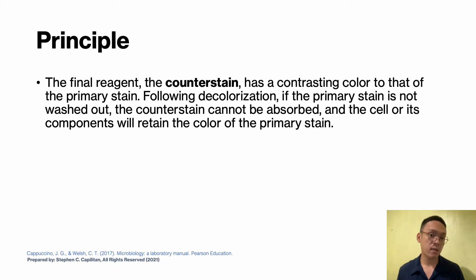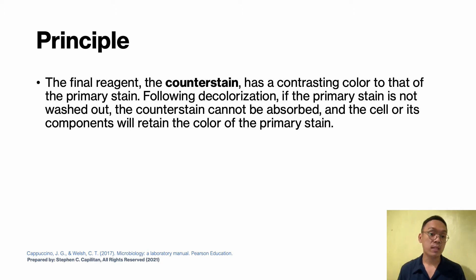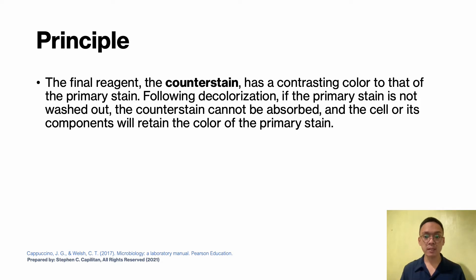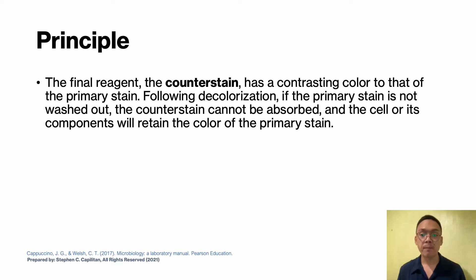To establish color contrast, the third reagent used is a decolorizing agent. Based on the chemical composition of your cellular components, the decolorizing agent may remove the primary stain from the entire cell or only from certain cell structures. The final reagent is the counter stain, which has a contrasting color to that of the primary stain. In this way, cell types or their structures can be distinguished from each other based on the stain being retained.